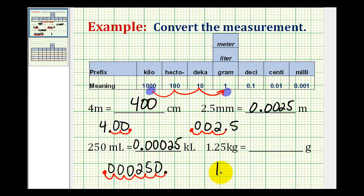So we have 1.25 with the decimal point to the right three times. One, two, three. So we'd have 1,250 grams.